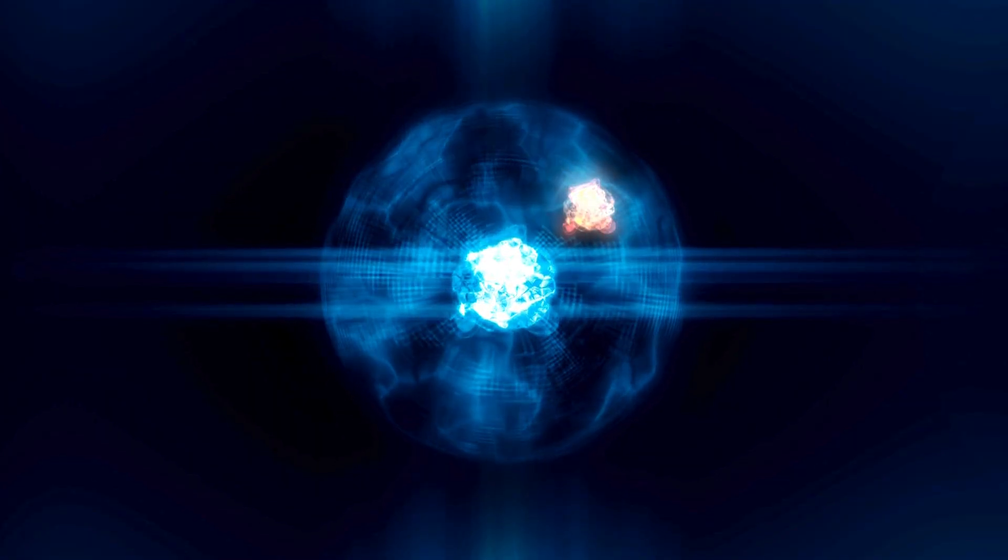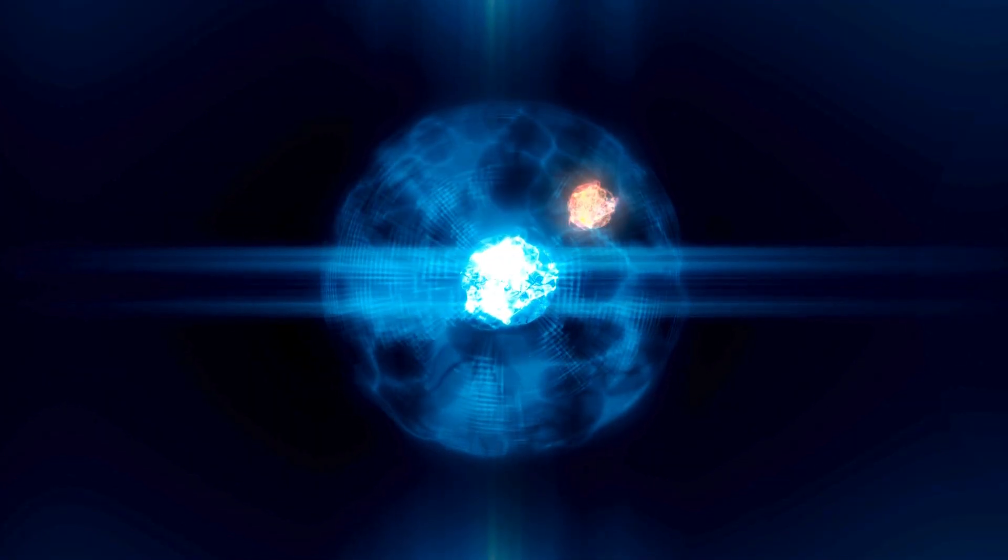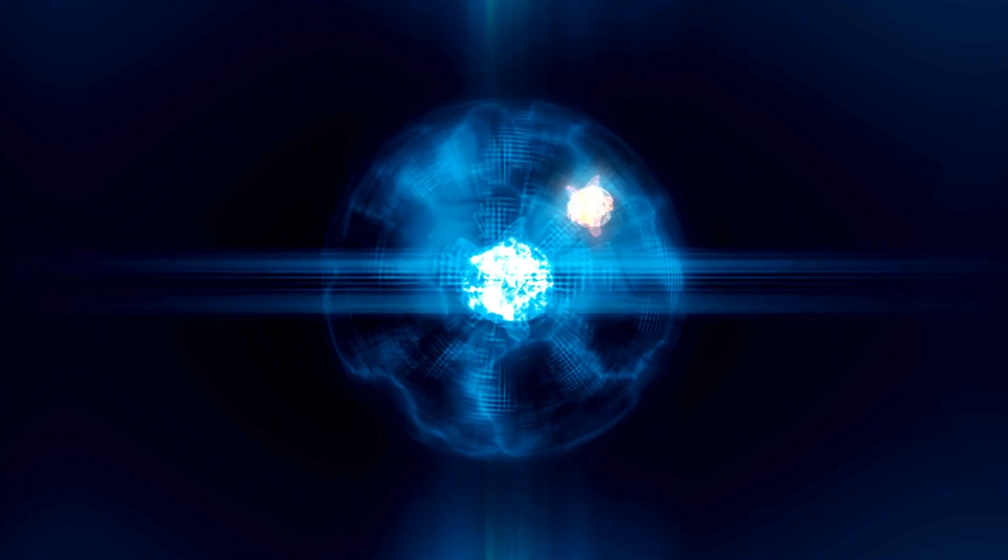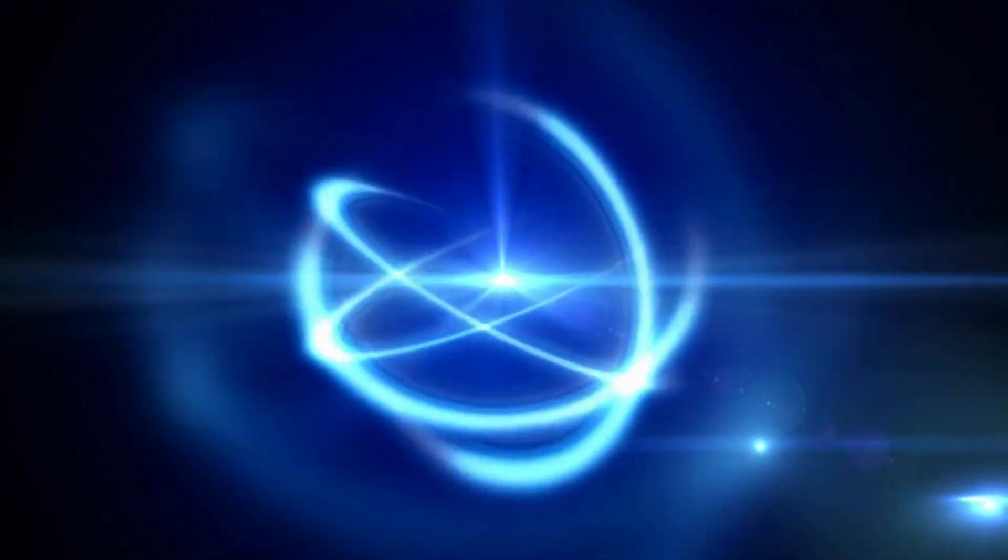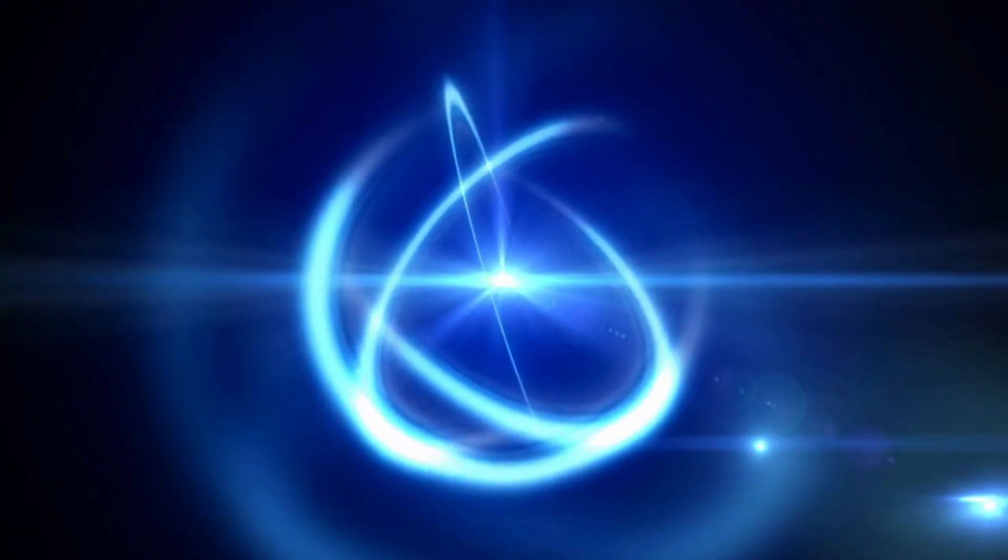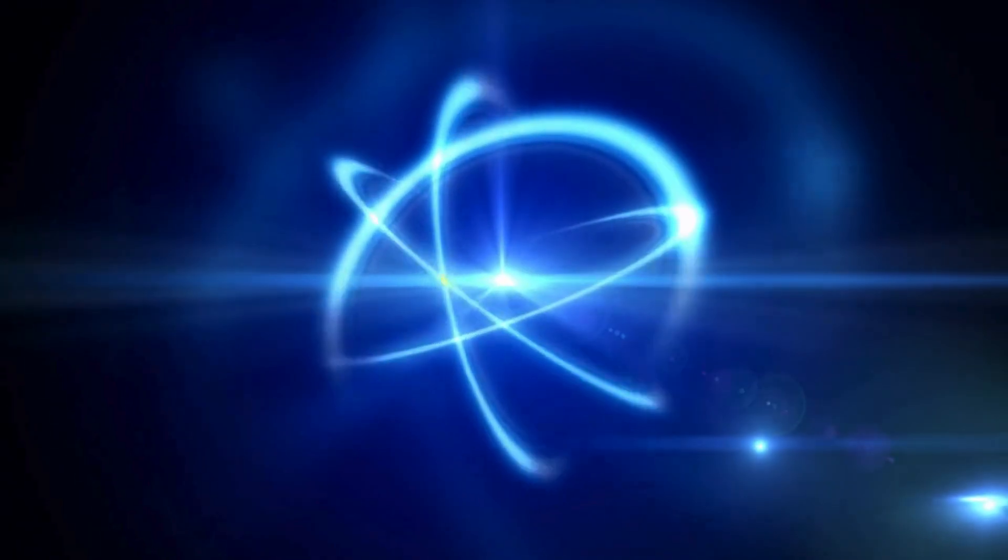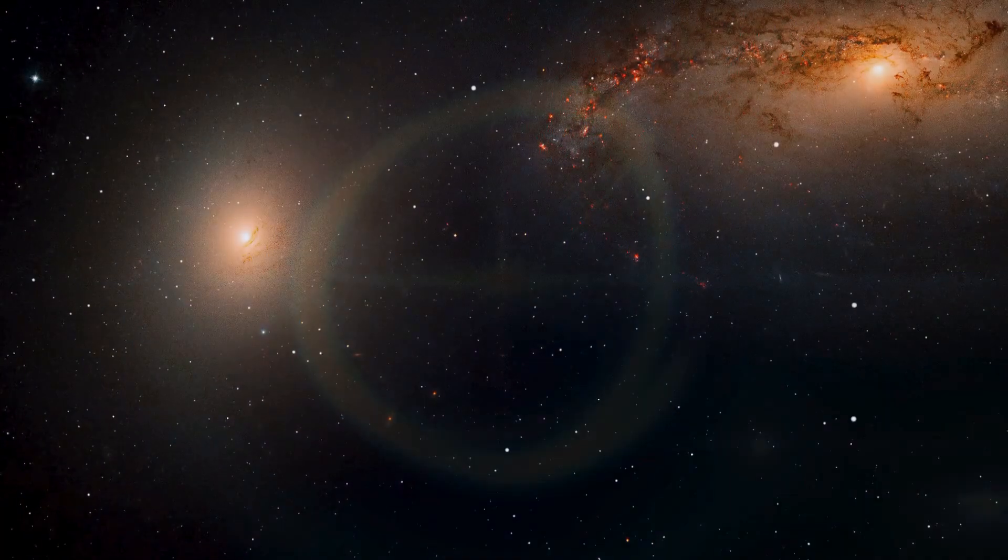If the electron absorbs even more energy, its cloud grows more complex, stretching into forms that resemble three-dimensional flowers, with lobes pointing in various directions. These are the famous p orbitals: px, py, and pz, each oriented differently in space.